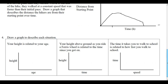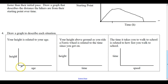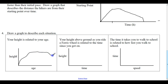Draw a graph to describe each situation. Your height is related to your age. You start growing pretty quickly, then slow down and keep going. Maybe you go through a growth spurt, then it levels off. And if you get old, osteoporosis or something sets in and you can actually shrink — your height decreases slightly.